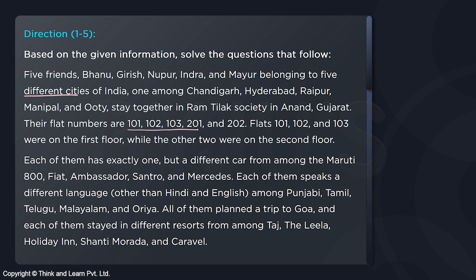Their flat numbers are among these five: 101, 102, 103, 201, and 202. Rooms 101, 102, and 103 are on the first floor; 201 and 202 are on the second floor. Each of them has exactly one different car from Maruti 800, Fiat, Vespa, Centro, and Mercedes, and each speaks a different language: Punjabi, Tamil, Telugu, Malayalam, and Oriya.